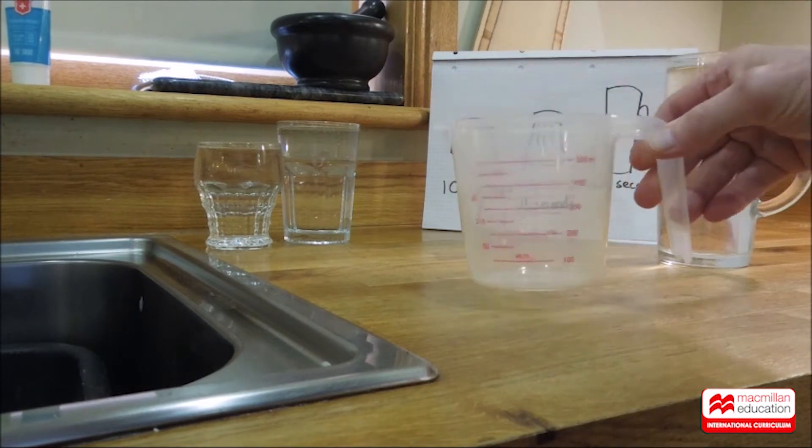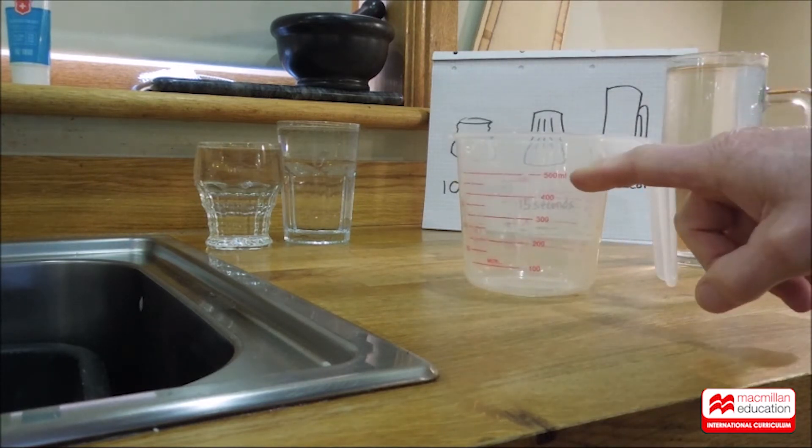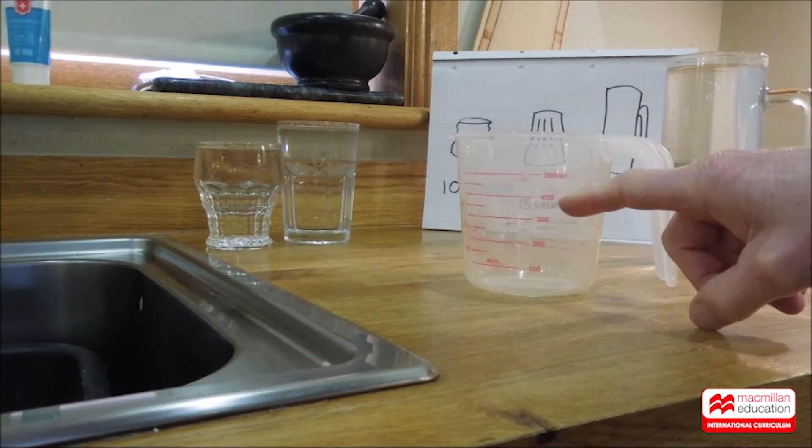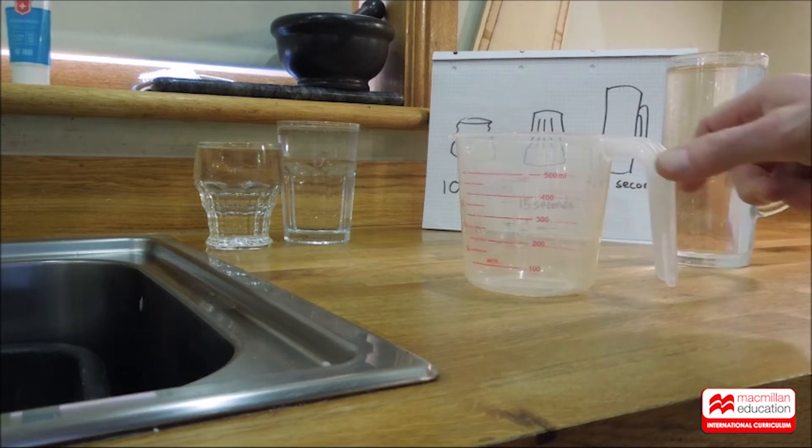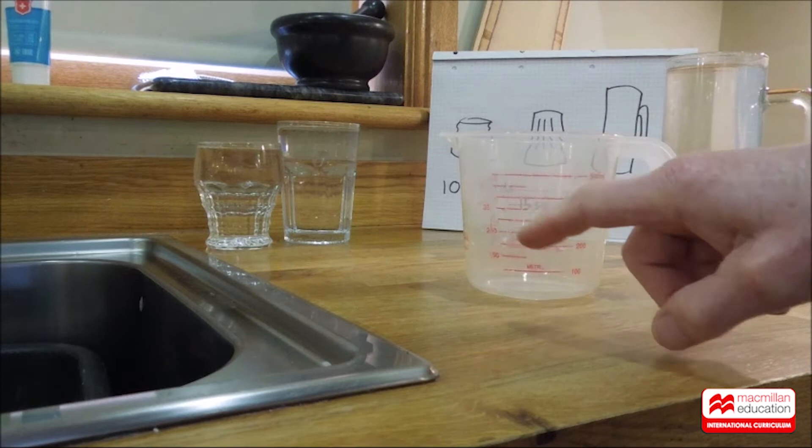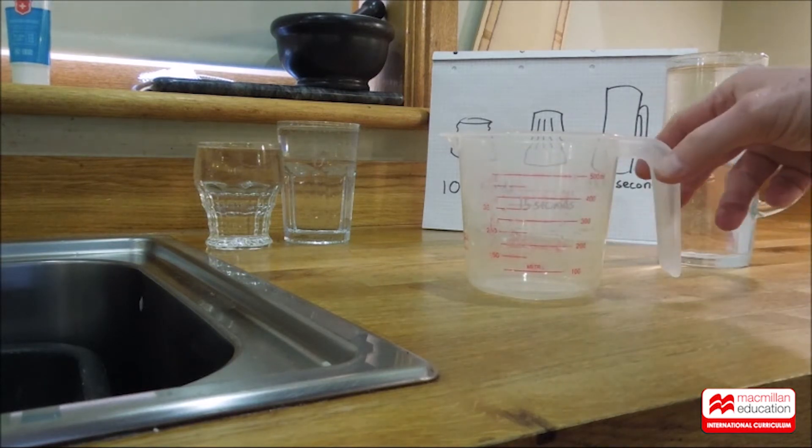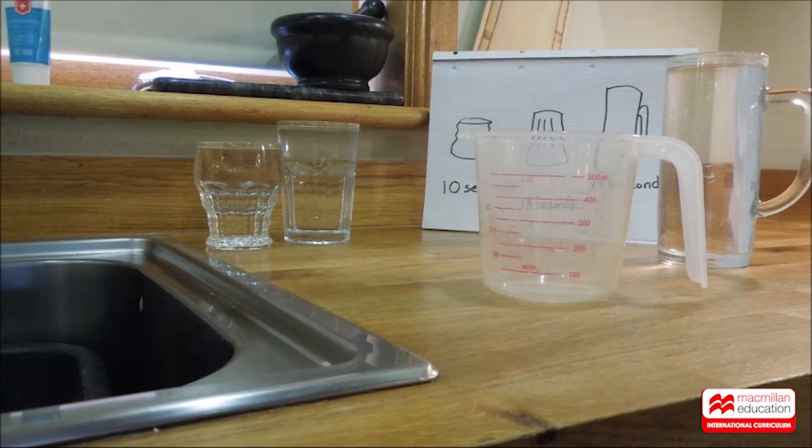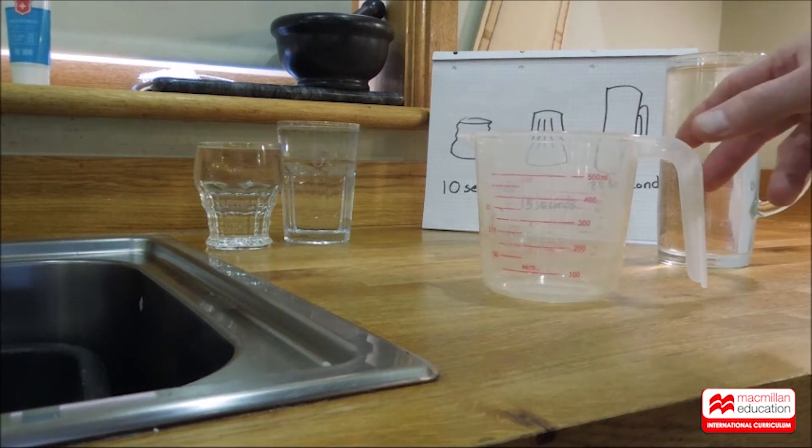It's a measuring jug and it measures the volume of liquid in milliliters. 500 mils, 400, 300, 200, 100, and halfway between 250, 350, 450. So we can measure the volume of the water in the cups, which of course is the same as the volume of the air in each cup.